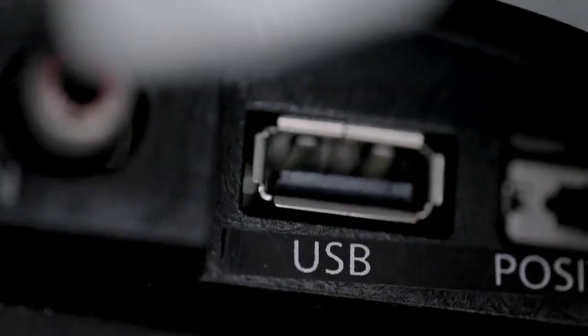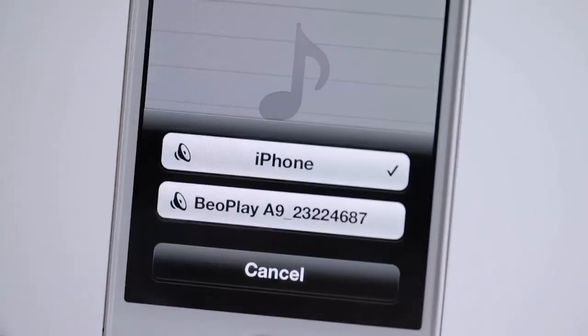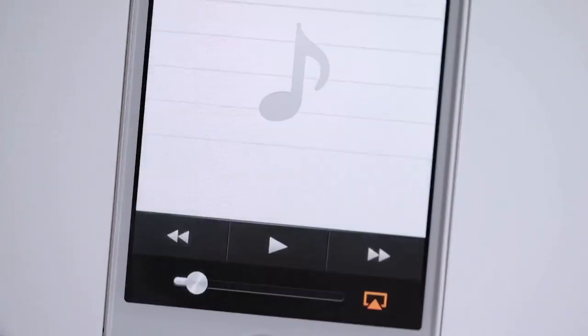Your Beoplay A9 is now set up and you can remove the USB cable. To hear your Beoplay A9 in action, launch your music application, choose a song, click the AirPlay icon, and select Beoplay A9 from the list.